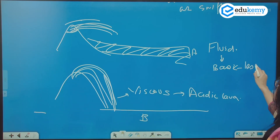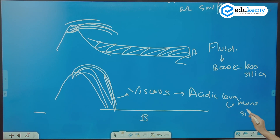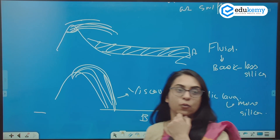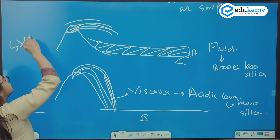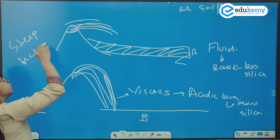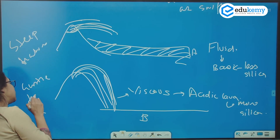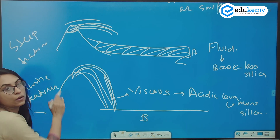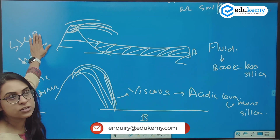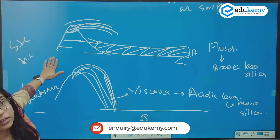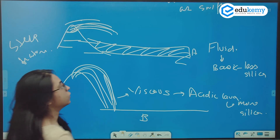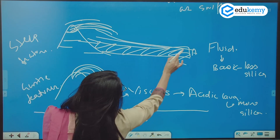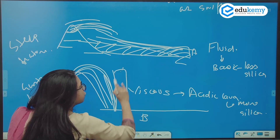This, A, has got less silica, and this, B, has got more silica. Out of A and B, which will form steep features on earth and which will form gentle features? This A will form gentle features, whereas B will form the steep features.